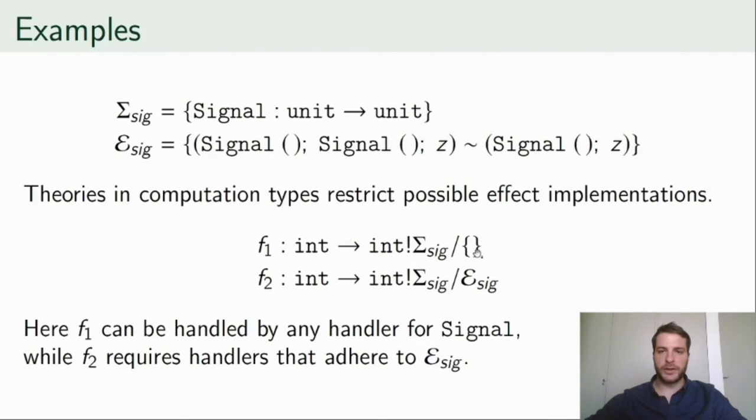f1 has no equations while f2 uses the above equation. This means that f1 can be handled by any handler for signal, while f2 requires the handler to not differentiate between one and many signals. We can, of course, use such handlers for f1 as well, but not vice versa.